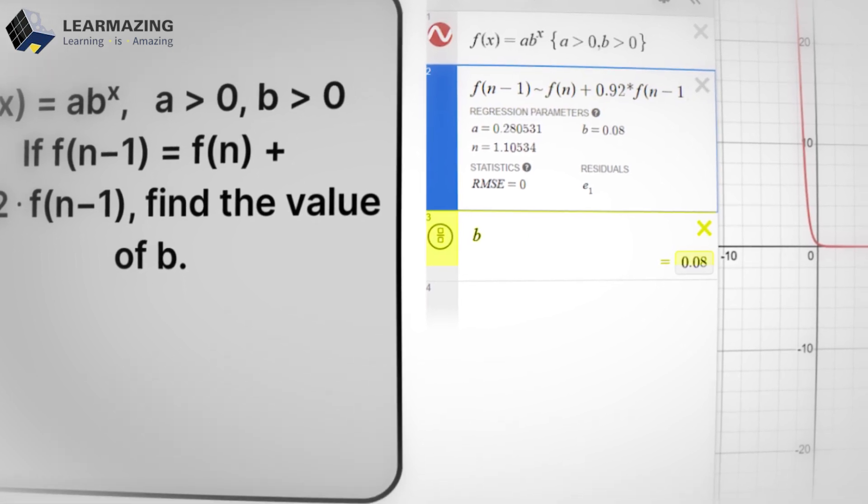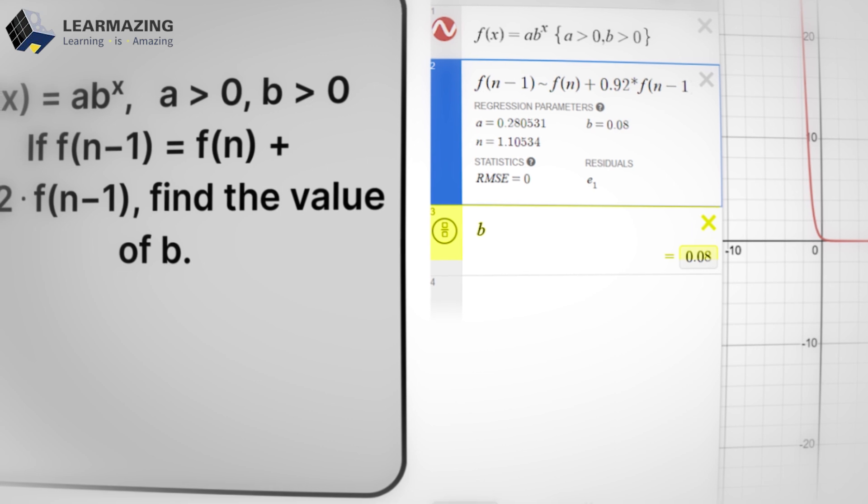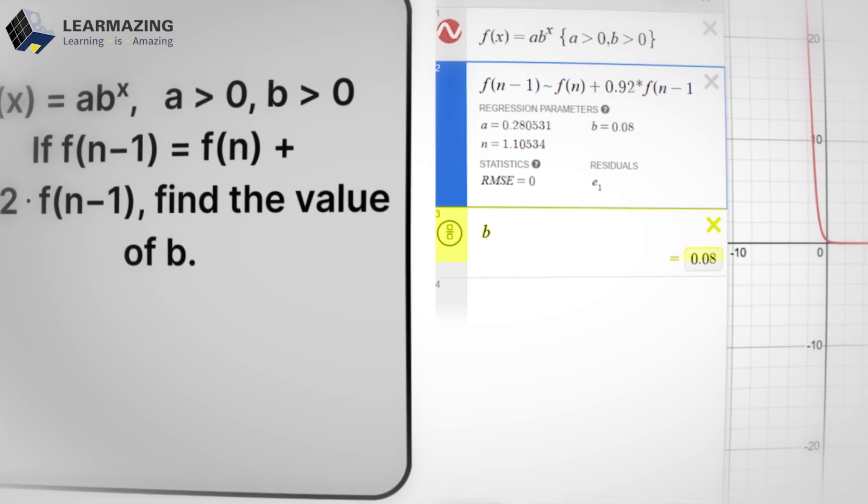Then, write b. And boom, Desmos spits out the answer. No messy algebra, no second guessing.